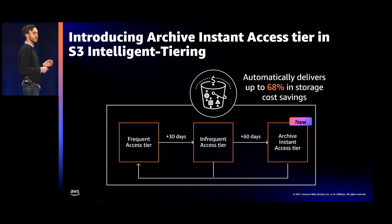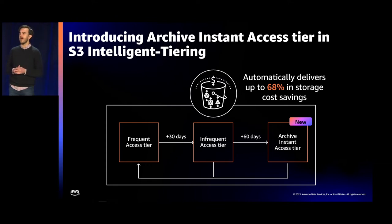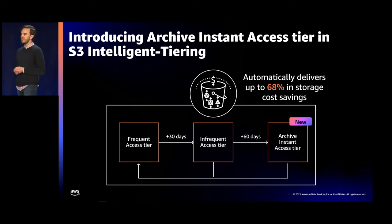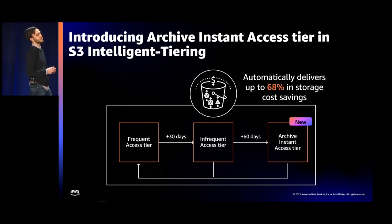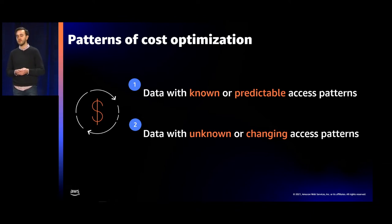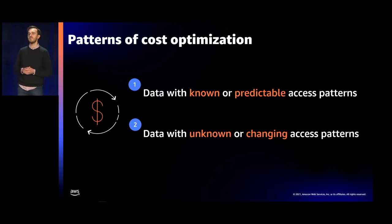S3 Intelligent Tiering delivers automatic storage cost savings by monitoring data at the granular object level and moving objects to lower-cost access tiers. It's really the ideal storage class for data that has unknown or changing access patterns. If you have data that requires instant access to storage and you have unknown or unpredictable access patterns, you can receive the same storage price as the S3 Glacier Instant Retrieval storage class with this new access tier in S3 Intelligent Tiering. Now I want to take a step back and talk about why we built these two innovations.